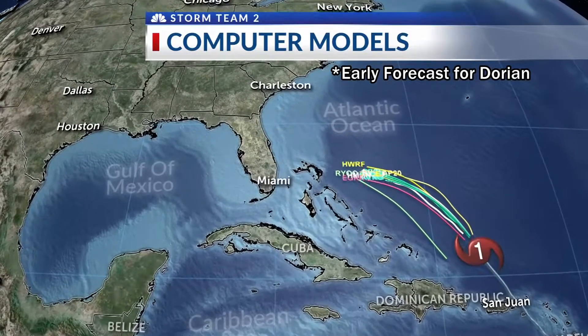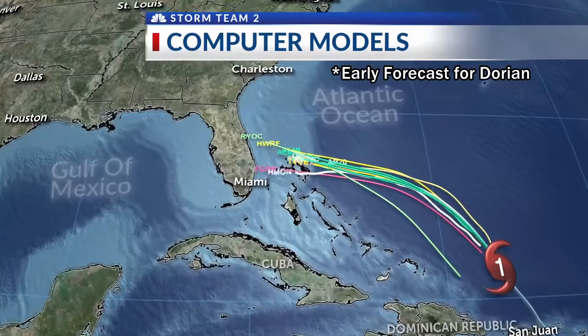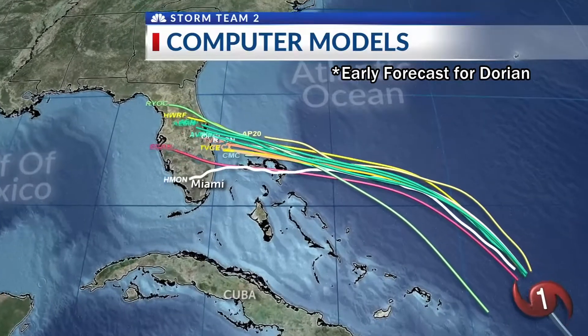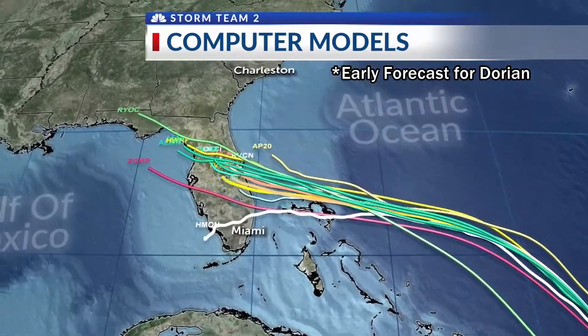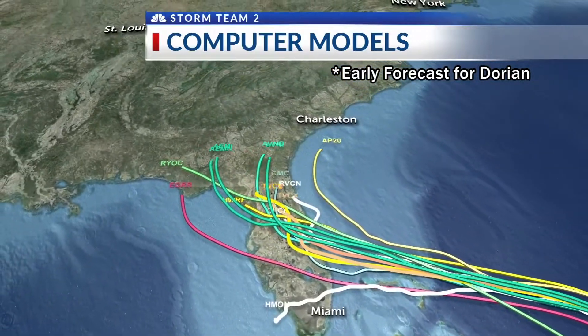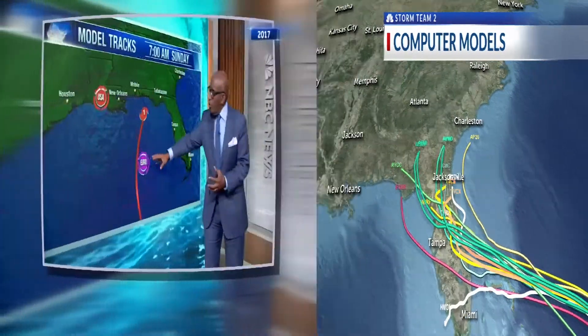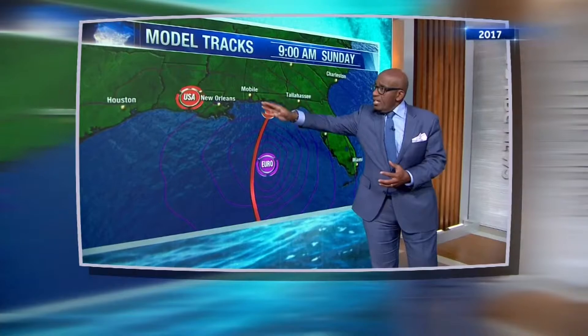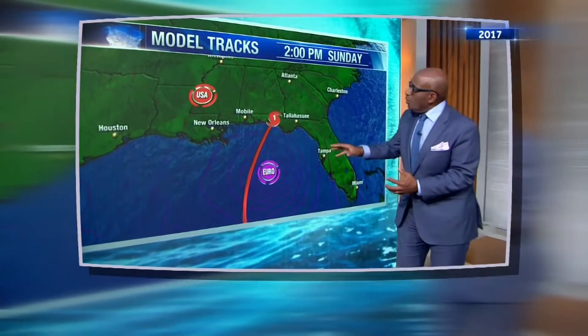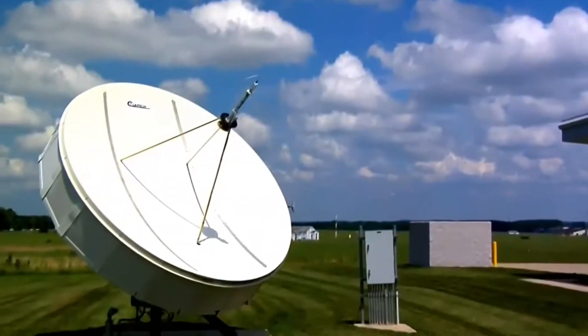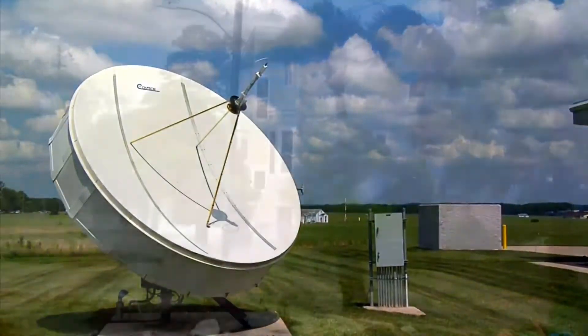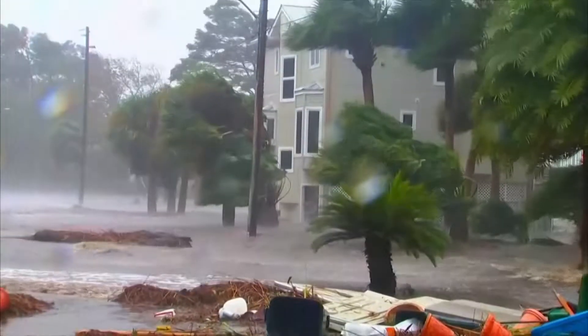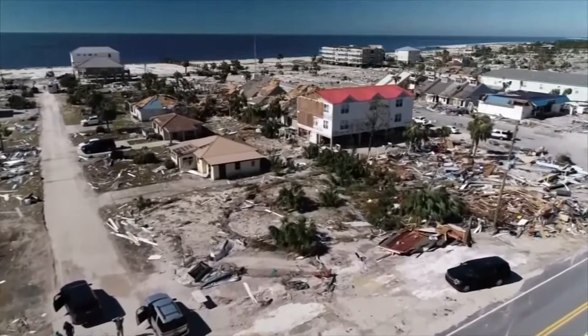Weather models get a lot of screen time during hurricane season. In fact, you probably know a few by name — Euro a little slower, the American model off to the west. Different models come up with different tracks, but why?